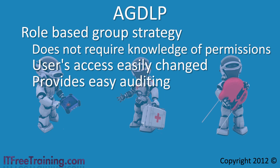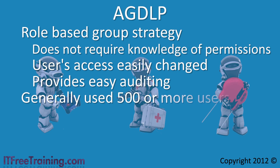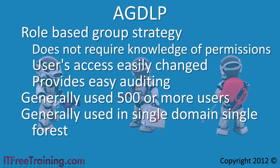AGDLP is a strategy that is generally used in medium sized networks. Microsoft defines this as a network with greater than 500 users. This strategy is also mainly used in a single domain single forest environment, although it could be used throughout the forest. If you have a larger environment, the next video discusses another strategy that is often used in multiple domain environments. Both of the strategies are designed for large networks.